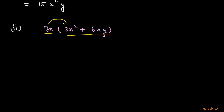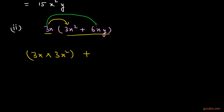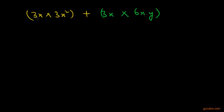First of all, we shall multiply 3x with 3x² and write it here: 3x into 3x². Then we write the plus sign and multiply 3x with 6xy, giving us 3x multiplied by 6xy. If we multiply 3 with 3 we get 9, and if we multiply x with x², the powers get added.